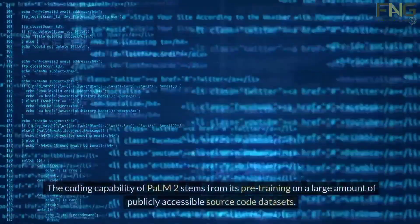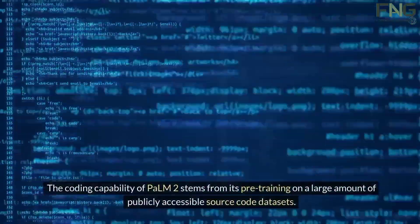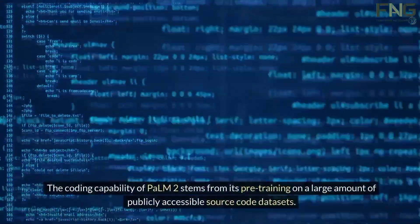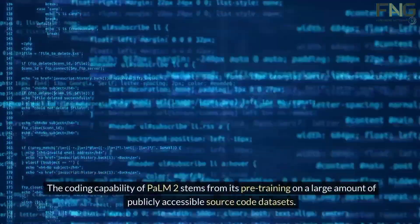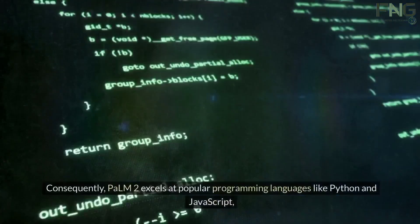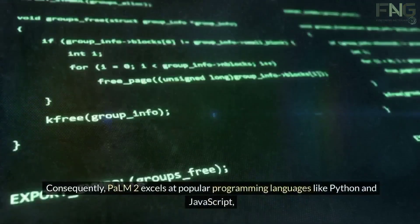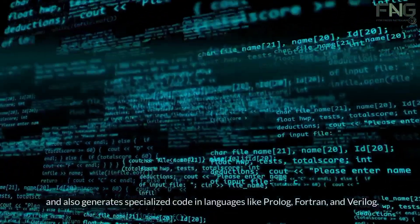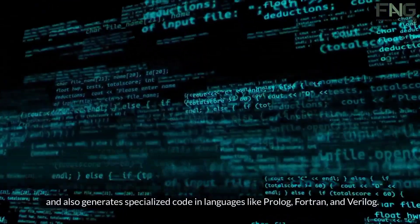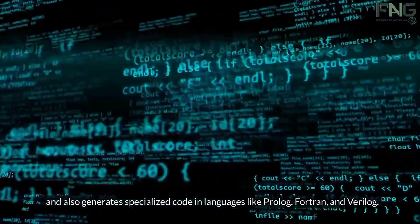Coding. The coding capability of Palm 2 stems from its pre-training on a large amount of publicly accessible source code datasets. Consequently, Palm 2 excels at popular programming languages like Python and JavaScript, and also generates specialized code in languages like Prolog, Fortran, and Verilog.